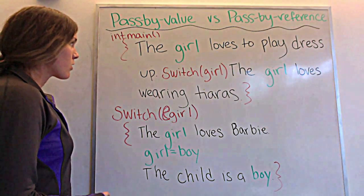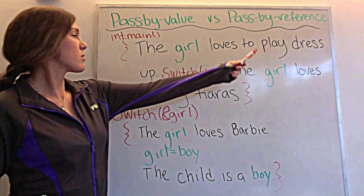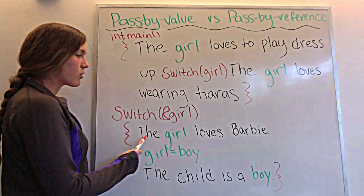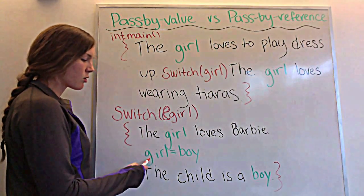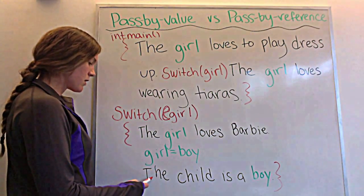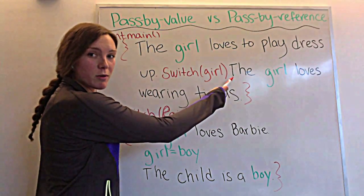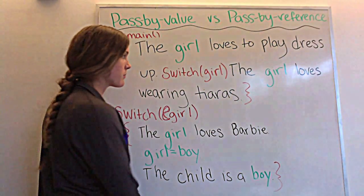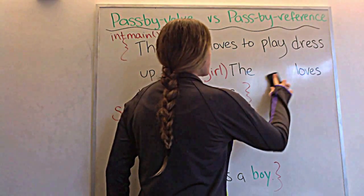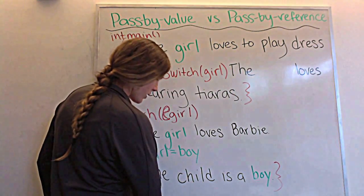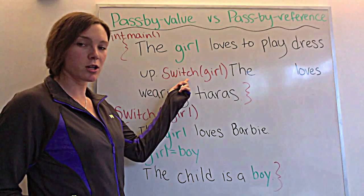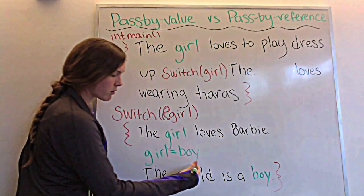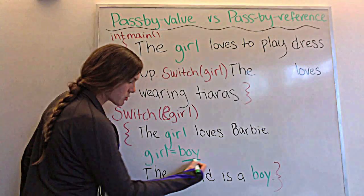It says the girl loves to play dress up. Now we switch and go into our switch function: the girl loves Barbies, girl now equals boy, the child is a boy. Now we're back in our main function because our switch function has been completed. Every time we use the variable after our switch function inside our main function, it takes the new variable from the function that was just completed.